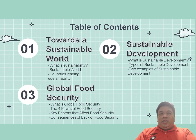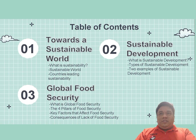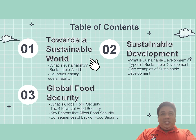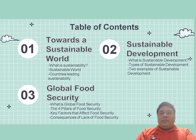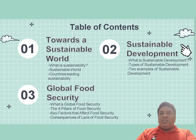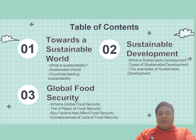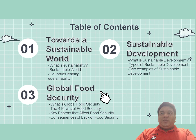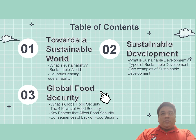Now let's start with the table of contents. This presentation has three parts. The first is Towards a Sustainable World, covering what is sustainability, sustainable world, and countries leading in sustainability. The second part is Sustainable Development, including its definition, types, and examples. The third part is Global Food Security, covering its definition, the four pillars of food security, key factors that affect it, and the consequences of lack of food security.